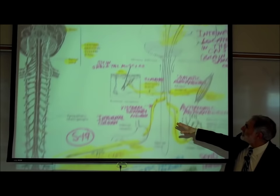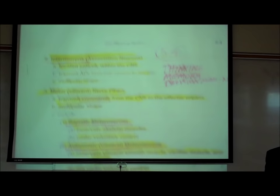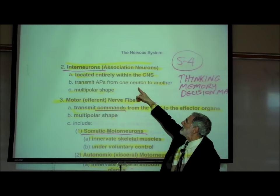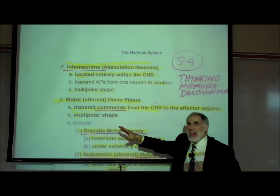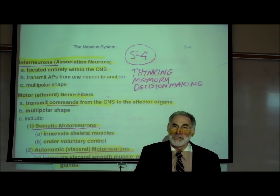Those are the two types of sensory or afferent neurons: somatic sensory and visceral sensory neurons. Returning to S4: the second functional class of neurons are interneurons — neurons located entirely within the brain and spinal cord, within the central nervous system. These neurons generally have a multipolar shape. Their functions include thinking, remembering, and making decisions, among other things.